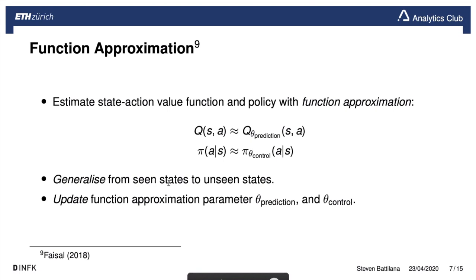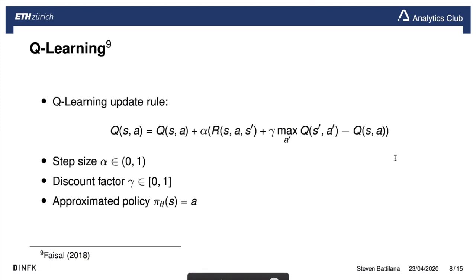We hope to generalize from seen states to unseen states. Next, we look at the update function — specifically the Q-learning update rule — as an example of how to update the Q-value. This update rule will be revisited throughout the presentation to give a high-level notion of what the papers are tweaking.